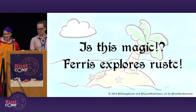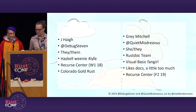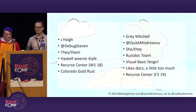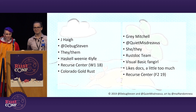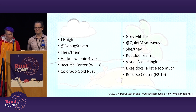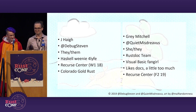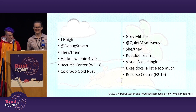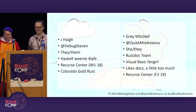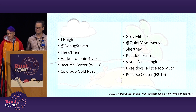But first, we'd like to introduce ourselves. Hello, my name is Jay Haig, and I'm DebugSteven on Twitter. I'm currently a Haskell developer at SimSpace. I'm organizing Colorado Gold Rust this year — it's on September 20th and 21st, if you're interested in attending. I've contributed to a handful of Rust projects, including Rust-Doc inside of rustc. I did my first contribution to rustc at the Recurse Center last winter.